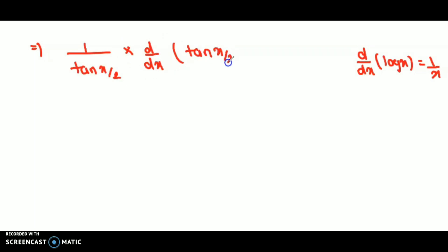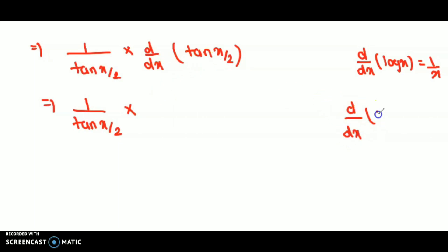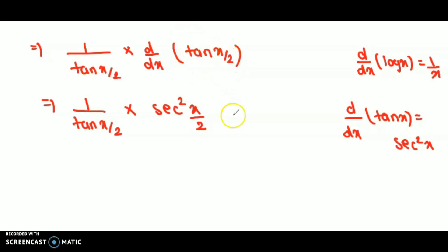So this becomes 1 over tan(x/2), multiplied by the derivative of tan(x/2). The formula is: the derivative of tan x is sec² x. Using this, the derivative of tan(x/2) gives sec²(x/2). By chain rule, we also need to differentiate x/2, since that is another inner function.